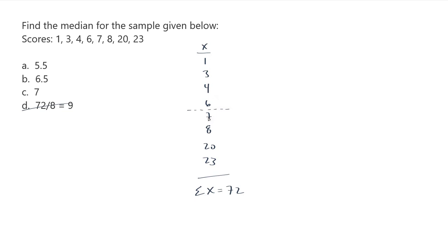I also have 4 scores, 1, 2, 3, 4, that are higher in value than a number that is right there in between 6 and 7.